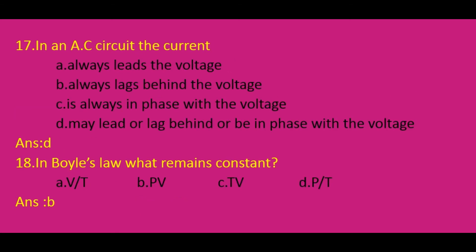In an AC circuit, the current: there are 4 options — always leads the voltage, always lags behind the voltage, is always in phase with the voltage, or may lead or lag behind or be in phase with the voltage. In an AC circuit, the current may lead, lag behind, or be in phase with the voltage. So the correct option is D.